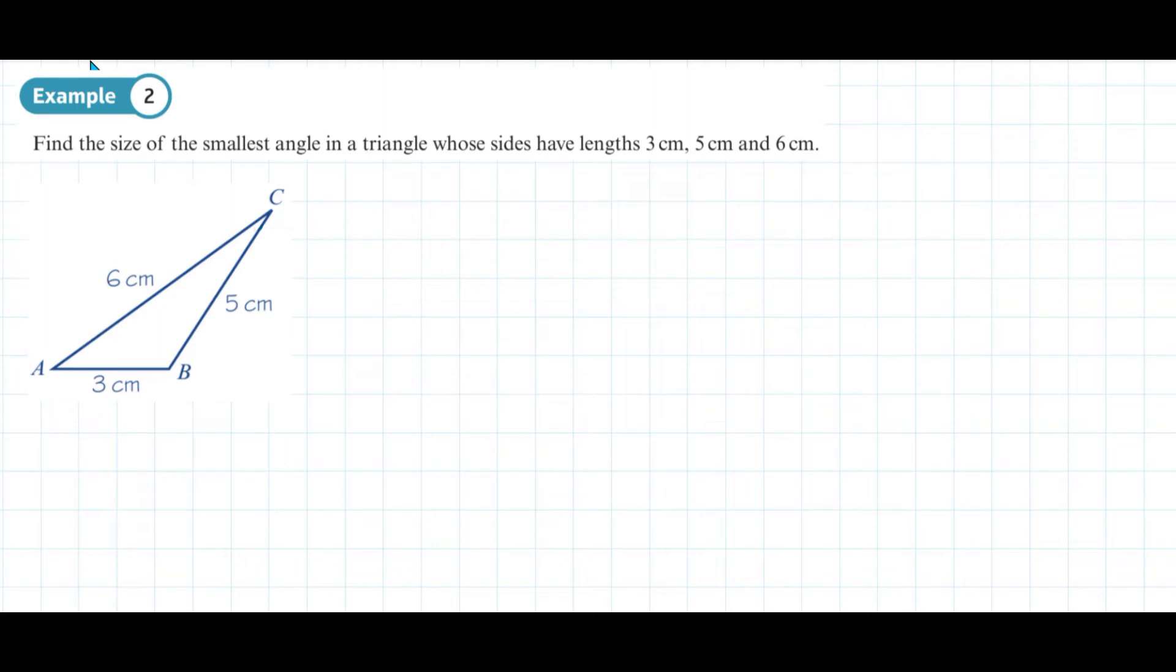This is Example 2 from page 175 of the Year 1 textbook. Find the size of the smallest angle in a triangle whose sides have lengths 3 centimeters, 5 centimeters, and 6 centimeters.